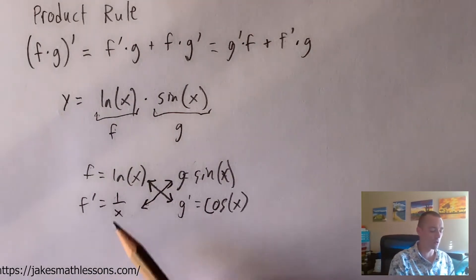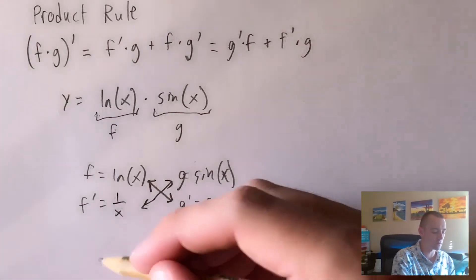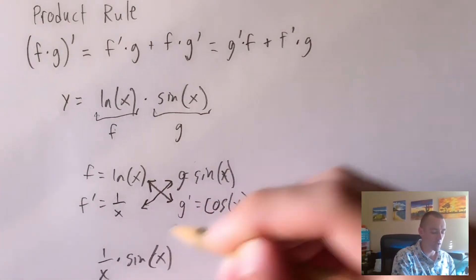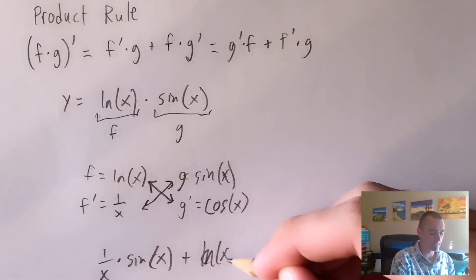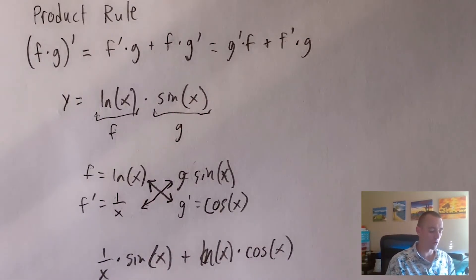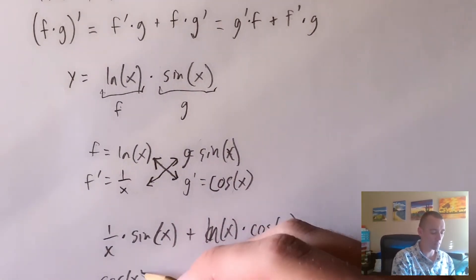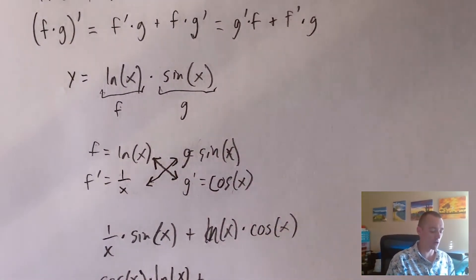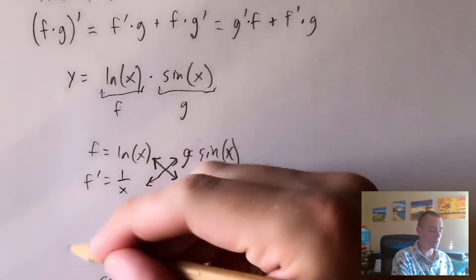So again, it doesn't matter what order you do this, we could do one over x times sine of x first, and then add on ln of x times cosine x. Or we could do cosine x times ln of x and then add on sine of x times one over x. These two things are equivalent.